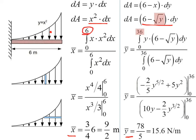Notice that your limits of integration here match what you're integrating with respect to. So if you're integrating dx, you're going to go from 0 to 6. If you're integrating dy, you're going to go from 0 to 36. That gives me 4.5 m and 15.6 newton meters.